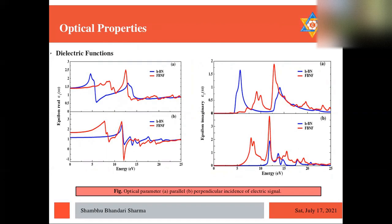And we see the epsilon imaginary. There are more bands, more peaks are pronounced for epsilon imaginary, indicating the fact that there is more interband transition in this fluorinated structure and more optical activity is increased.